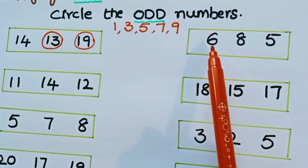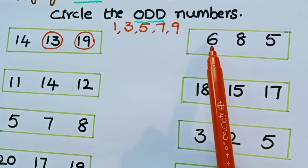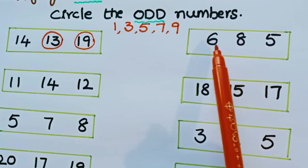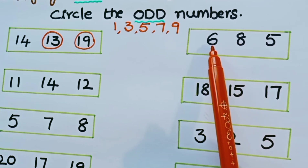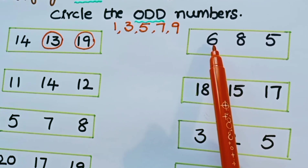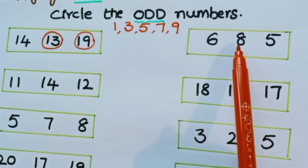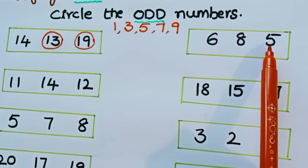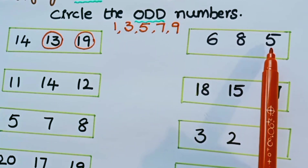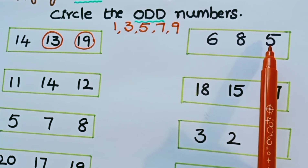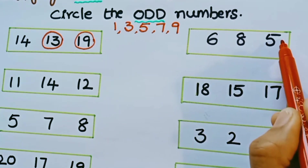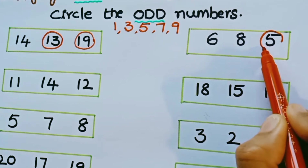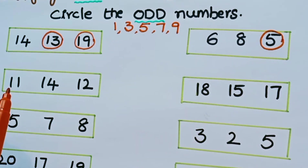Look at the numbers in the next row: 6, 8, 5. Is 6 odd or even? It is an even number. 8 is also an even number. Is 5 odd or even? 5 is an odd number. Let us circle 5. In this row we have only one odd number.